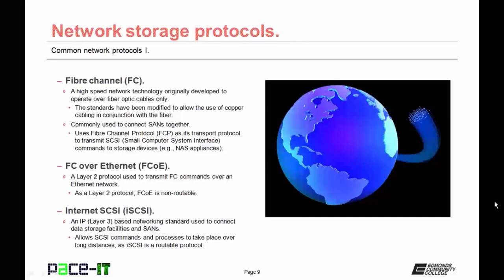Then we have FC over Ethernet, or FCoE — a layer 2 protocol used to transmit FC commands over an Ethernet network. As a layer 2 protocol, FCoE is non-routable. And finally, we have Internet SCSI, or iSCSI — an IP-based network standard used to connect data storage facilities and storage-attached networks. It is a layer 3 protocol that allows SCSI commands and processes to take place over long distance, as iSCSI is a routable protocol.